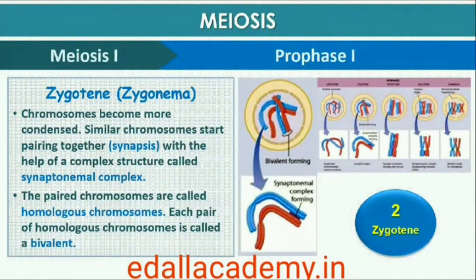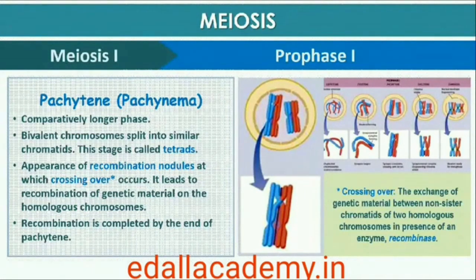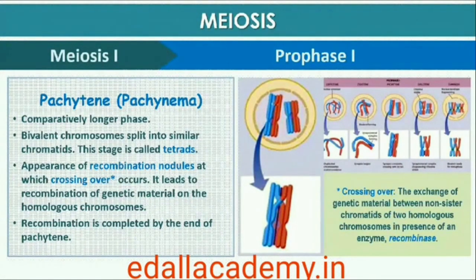The first two stages of prophase I are relatively short-lived compared to the next stage, pachytene. During this stage, bivalent chromosomes now clearly appear as tetrads. This stage is characterized by the appearance of recombination nodules — the sites at which crossing over occurs between non-sister chromatids of the homologous chromosomes. Crossing over is the exchange of genetic material between two homologous chromosomes, and it is also an enzyme-mediated process; the enzyme involved is called recombinase. Crossing over leads to recombination of genetic material on the two chromosomes, and recombination between homologous chromosomes is completed by the end of pachytene, leaving the chromosomes linked at the sites of crossing over.